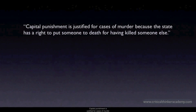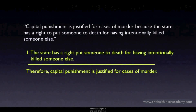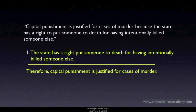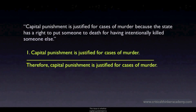Here's an example: 'Capital punishment is justified for cases of murder because the state has a right to put someone to death for having killed someone else.' When put in standard form, notice that even though the wording is different, the single premise and the conclusion are asserting the same thing. 'The state has a right to put someone to death' just means capital punishment is justified, and 'for having intentionally killed someone else' just means for cases of murder. So the argument is saying: capital punishment is justified for cases of murder, therefore capital punishment is justified for cases of murder. The issue is whether capital punishment is justified — that's the question being begged.